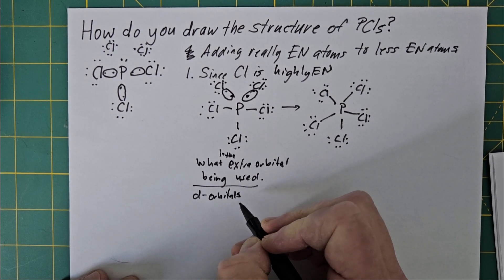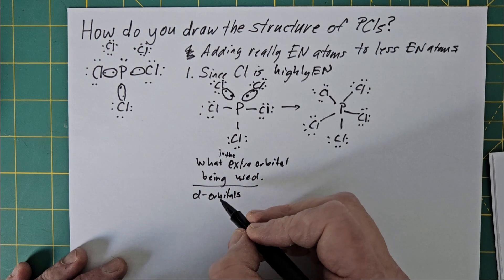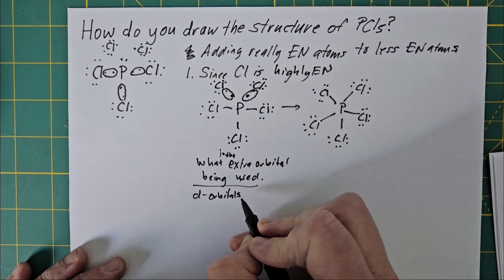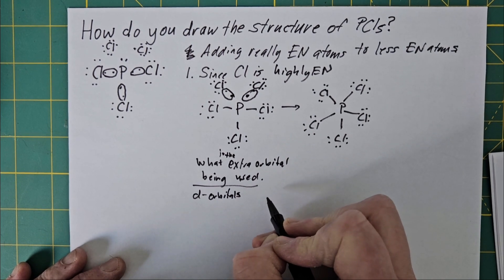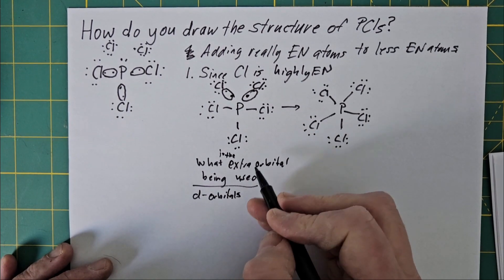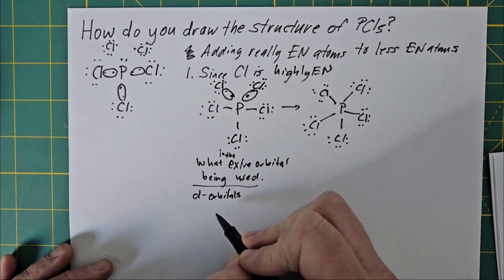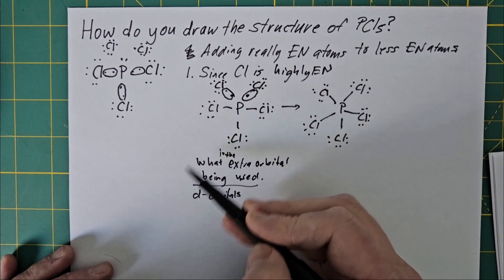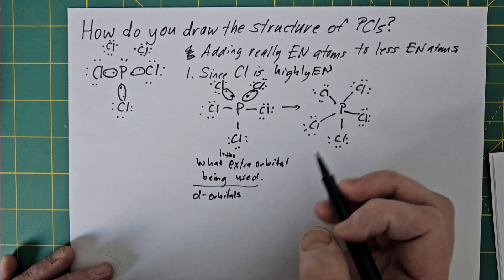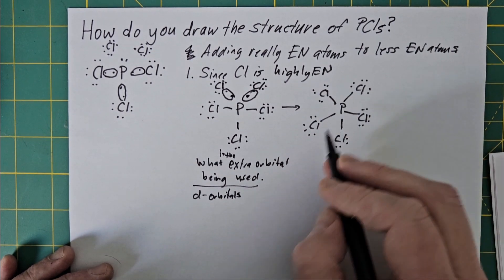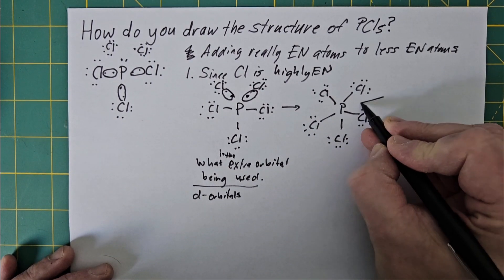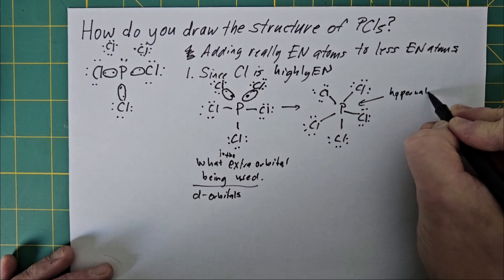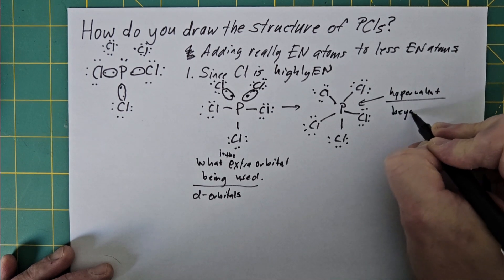Now you might be saying phosphorus doesn't have any d orbitals, but it has electrons that are in the third energy level, and there are d orbitals in the third energy level. And this explanation involves invoking using those d orbitals as part of your bonding to allow you to have more than four orbitals, so that's where the fifth orbital comes in. When you draw things like this, this phosphorus is sometimes referred to as being hypervalent, which means it has beyond an octet electrons.